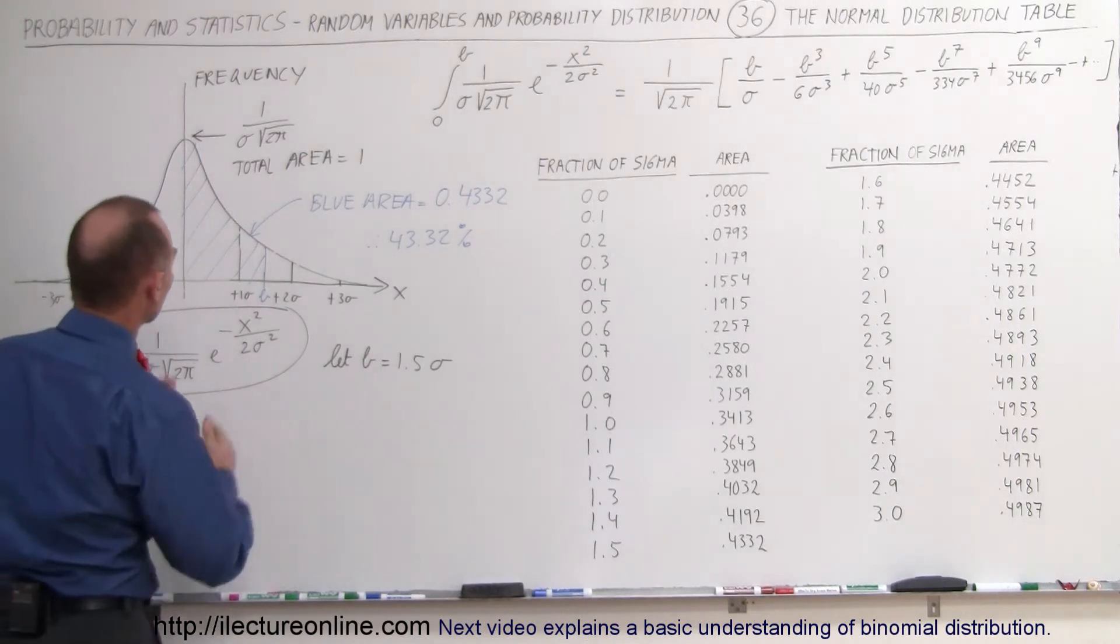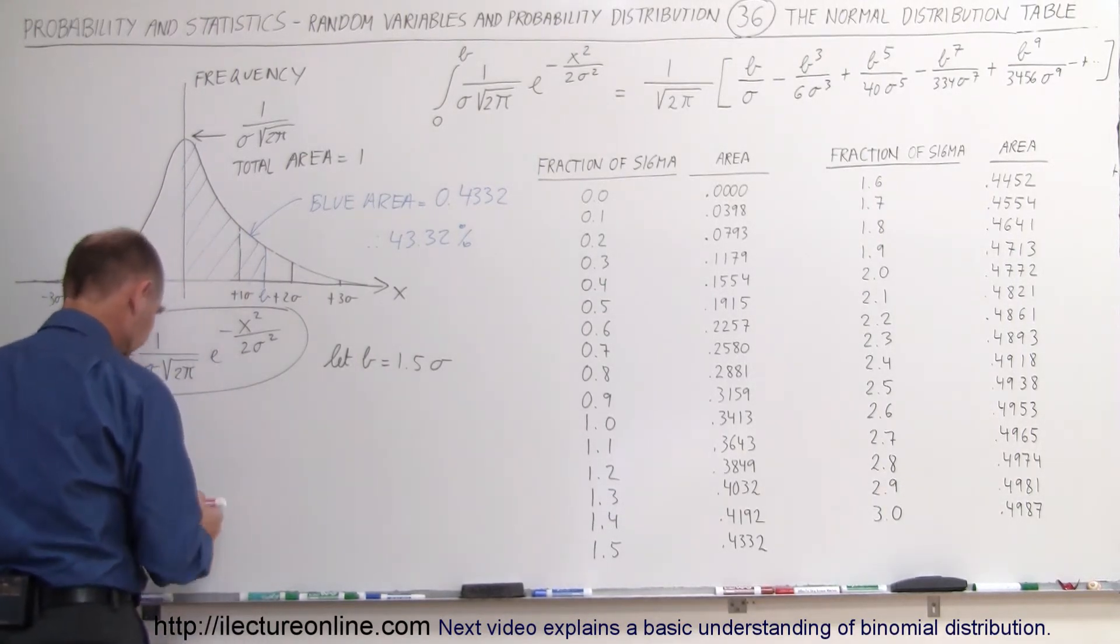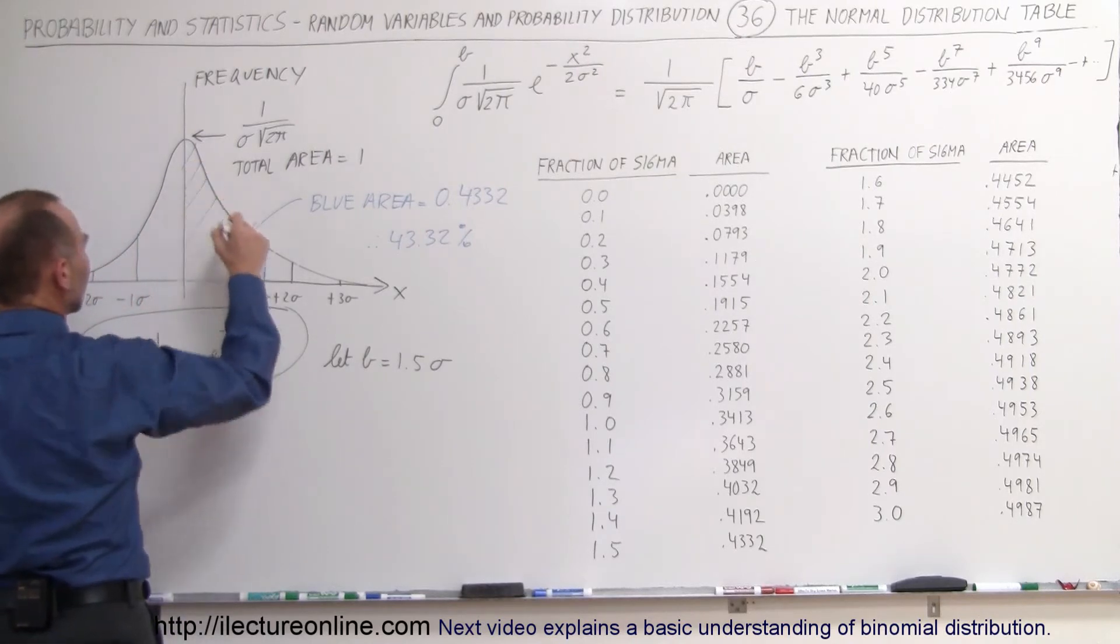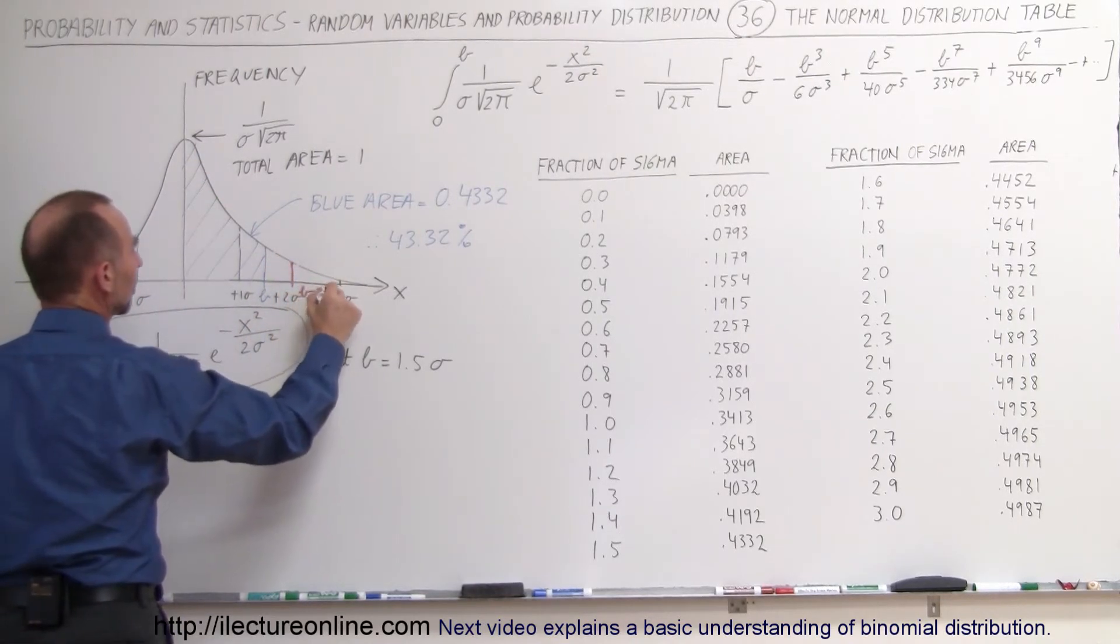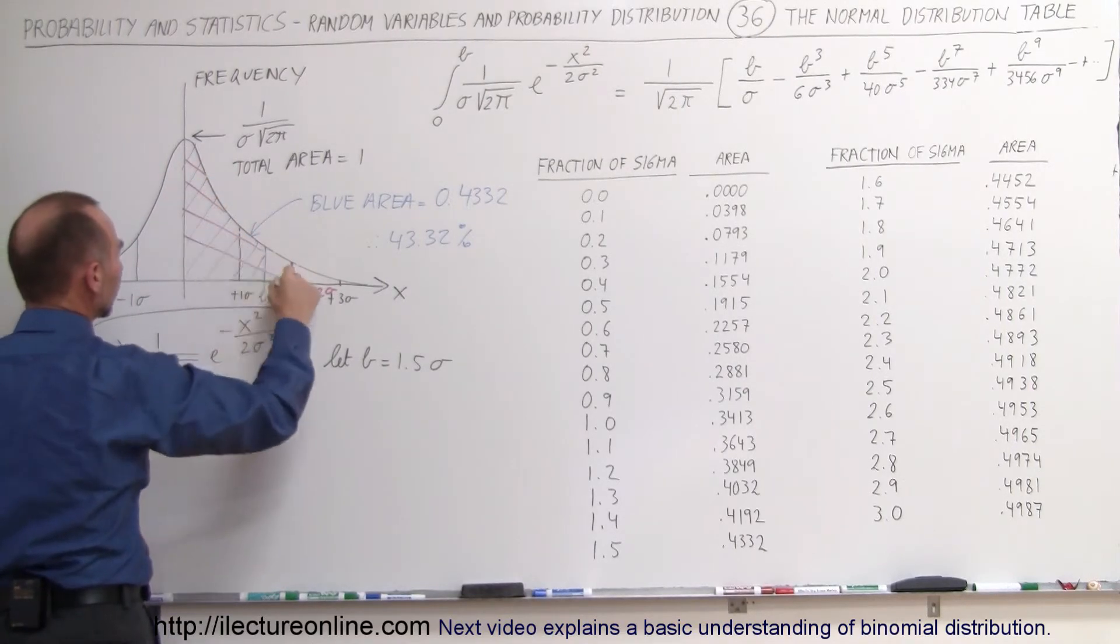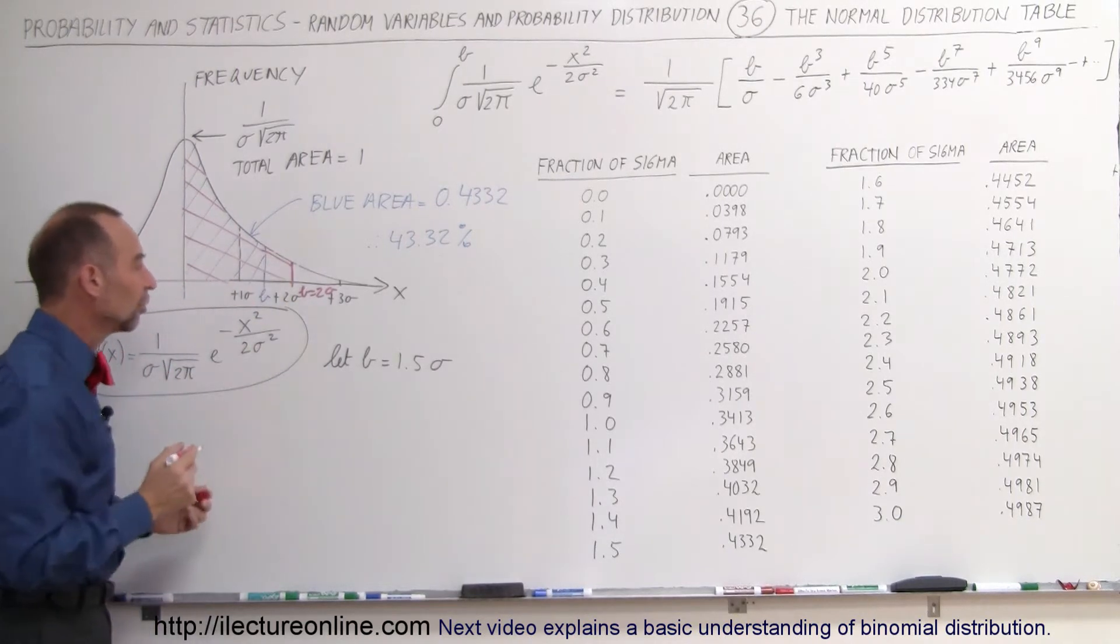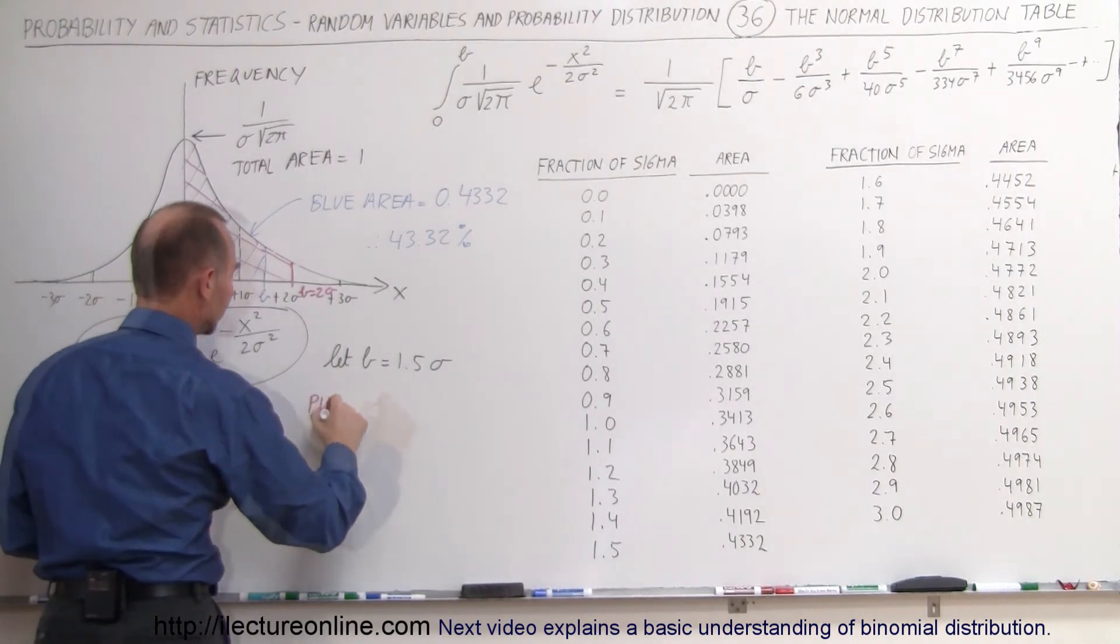Let's say that we want to find the area for 2 sigma. So let's say we're going to let b equal to 2 sigma. And so now we want to find the pink area underneath the curve which goes all the way out from 0 to b equals 2 sigma. So what would be the area now? We're now to the pink area.